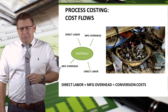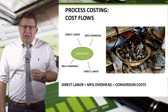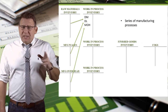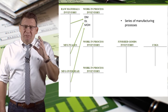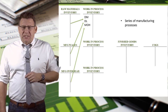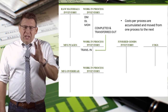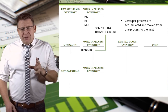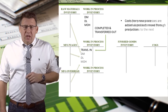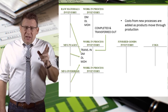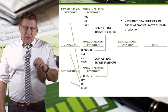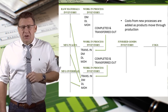The concepts are still the same — labor and overhead are applied to materials to create finished products — but there are significant differences. Process costing is a series of manufacturing processes where materials and conversion costs are added in each process. Costs in each process are accumulated and transferred to the next process once the first process is completed. Costs from new processes are added as products move through the production process, each time having additional costs added as new processes are completed.